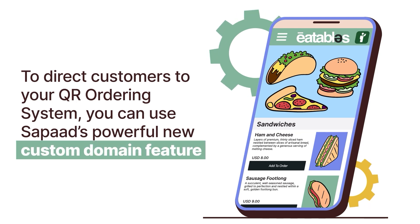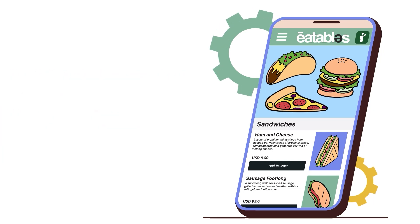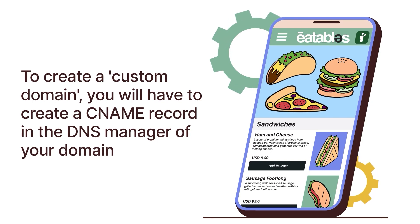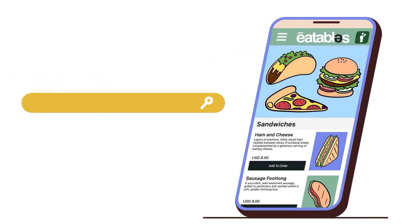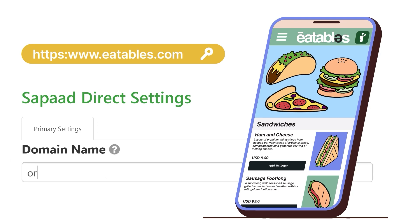Once you activate Saupad Direct for your account, you'll get a unique URL. To create a custom domain, you will have to create a CNAME record in the DNS manager of your domain. For example, if your domain is www.eatables.com, you can create a CNAME record for orders.eatables.com to point to the Saupad Direct store.